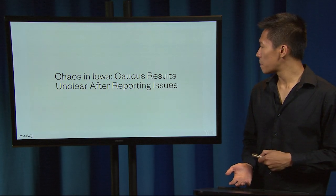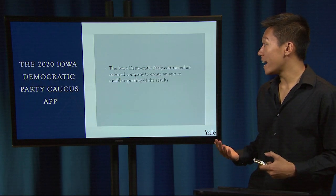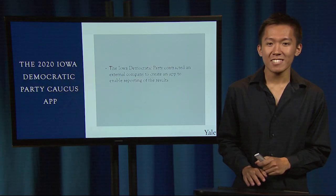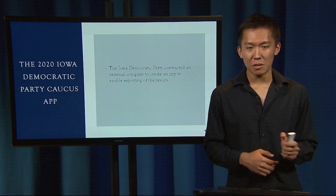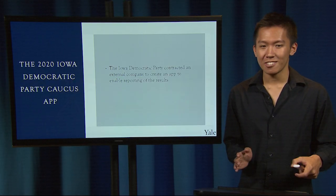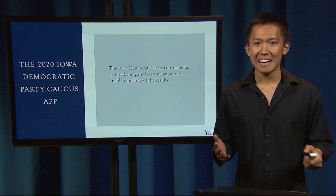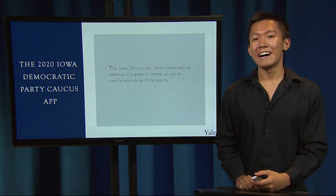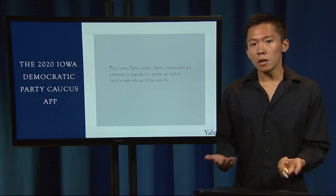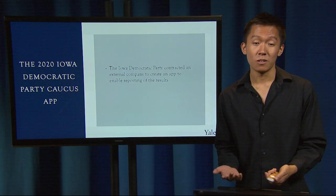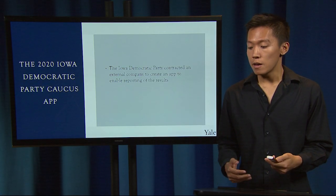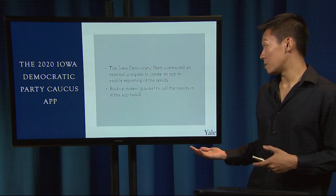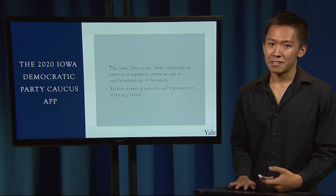The Iowa Democratic Party had contracted an external company named Shadow to create an app to enable the reporting of results. There's some interesting history behind it with a string of name changes and acquisitions, as well as some controversy around Shadow services being used by different Democratic candidates' campaigns to send messages and solicit donations. It's also kind of funny to name a company Shadow in the field of voting technology, where trust and transparency are so important. There was also a backup system by phone to call the results in if the app failed, but as we saw from the clip, that didn't really work either.